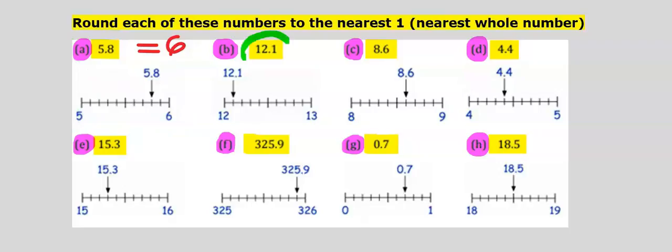Let's consider 12.1. 12.1 is between two whole numbers, which are 12 and 13, and this is halfway between both of them. 12.1 is closer to 12 than to 13. Hence, our answer is 12.